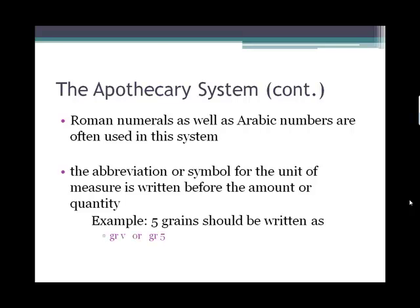For example, five grains could be written as GR, the abbreviation for grains, and the Roman numeral V stands for five. So GRV would represent five grains, or it can be written that way.